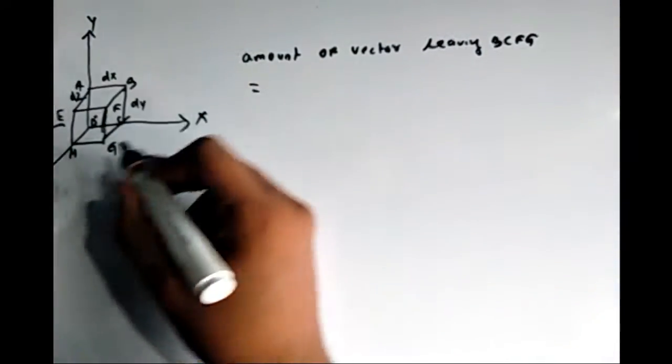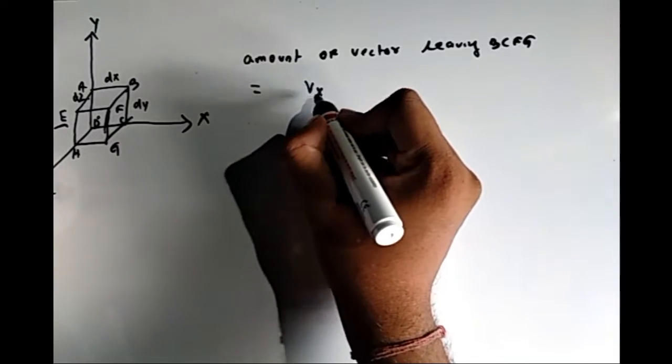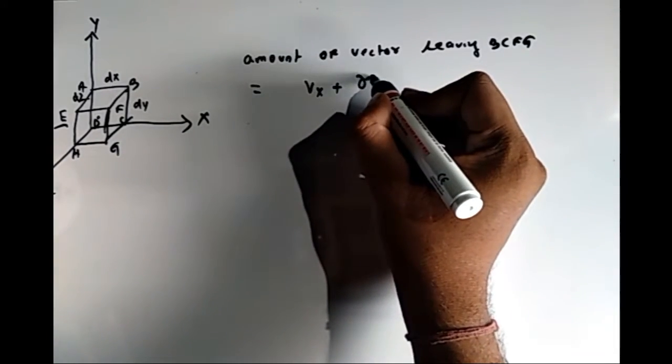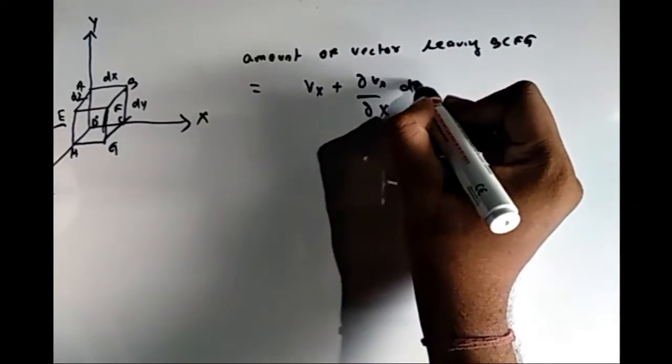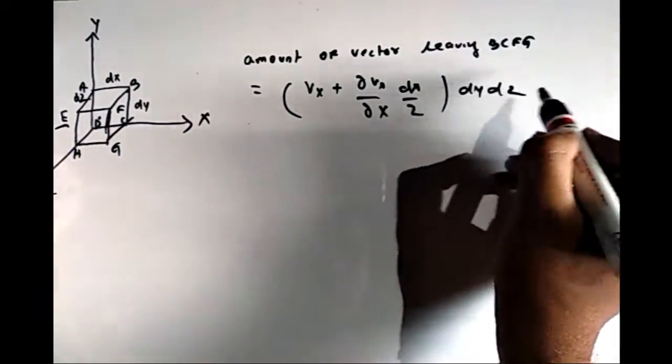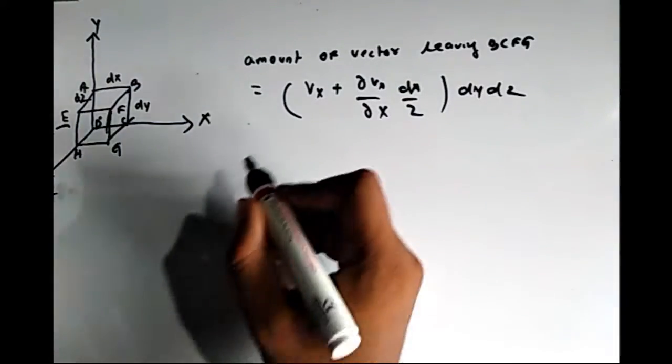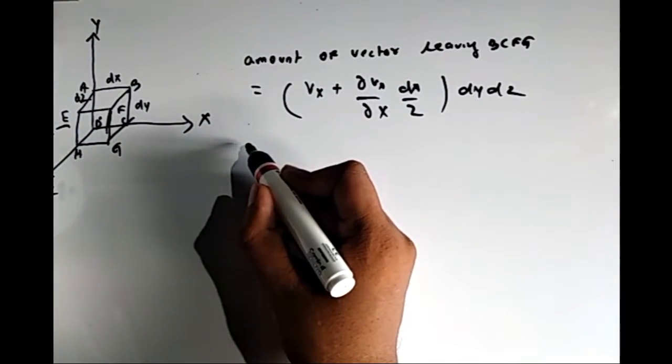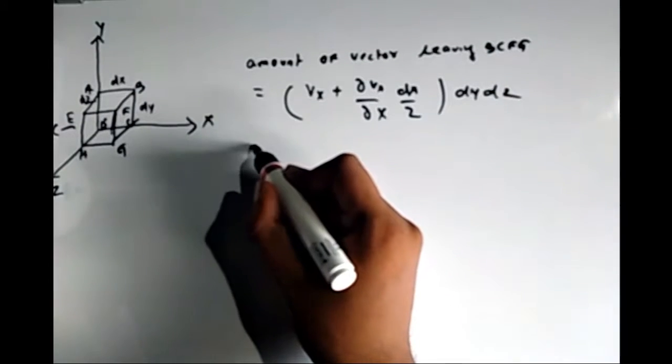This is because Vx is at the center and this vector V is a function of x. Now, Vx plus del Vx by del x times dx gives the value at point C or at the surface of VCFG.